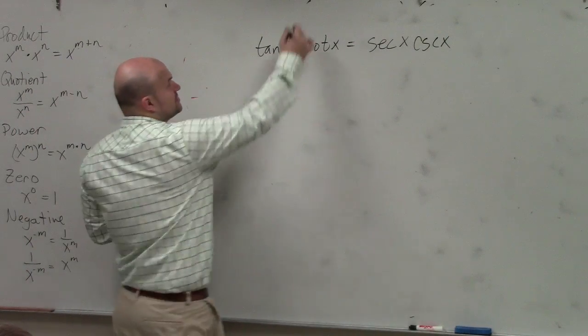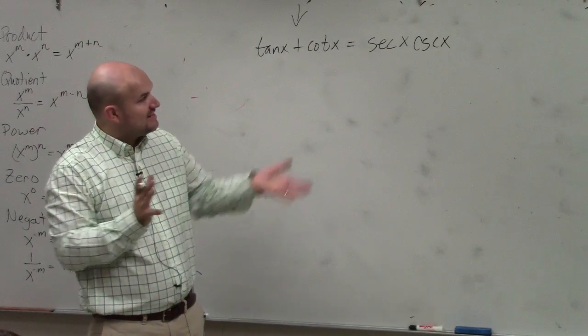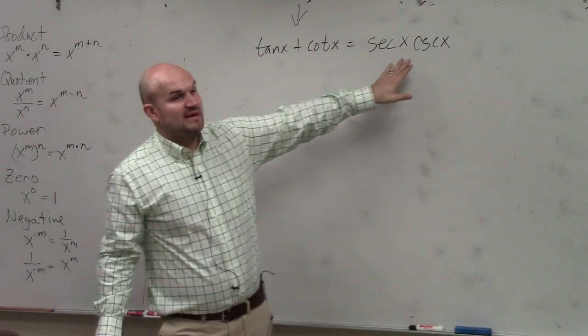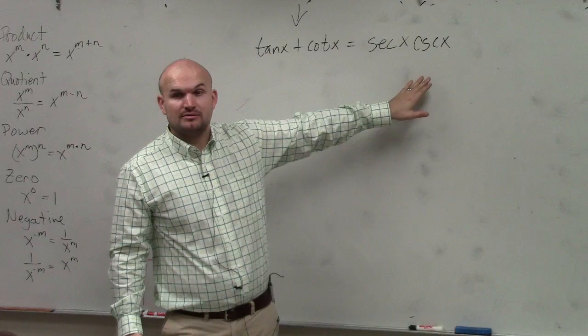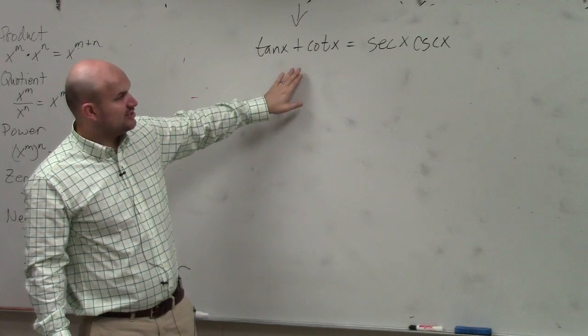I would choose to pick the left side, because if I want to make the left side look like the right side, I need to combine these two that are separated by addition to make sure that they're separated by multiplication, correct? So I would say this would probably be the one that would be the best operation.